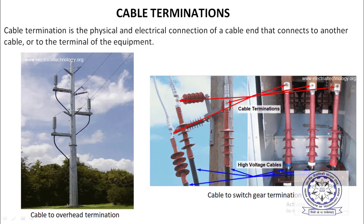For example, you can see here a transmission line tower ending here. It is a three-phase cable — you can see three phases. This is the first termination, this is another termination, and this is the third termination. This construction is called termination.